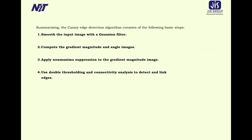A summary of the Canny edge detector steps: one — smooth the input image with a Gaussian filter; two — compute the gradient magnitude and angle images; three — apply non-maxima suppression to the gradient magnitude image; four — use double thresholding and connectivity analysis to detect and link the edges.